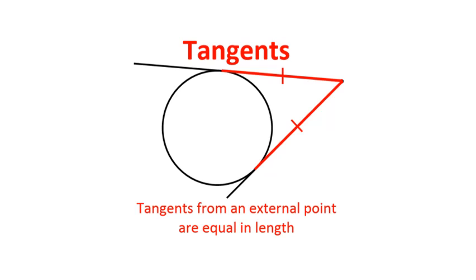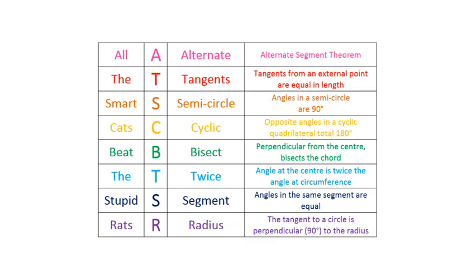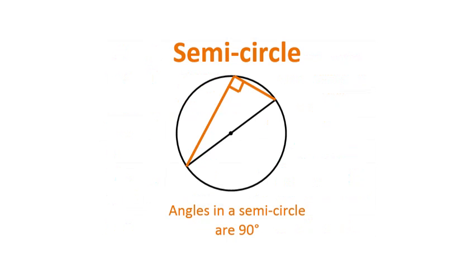Tangents from an external point are equal in length. All the smart cats beat the stupid rats. Angles in a semicircle are 90 degrees.